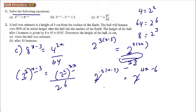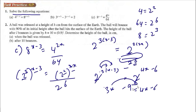So 3x minus 9 equals 4x minus 6. Bring 3x to the right: 4x minus 3x gives x. Bring negative 6 to the left: negative 9 plus 6 gives negative 3. So x is equal to negative 3.